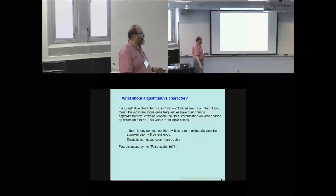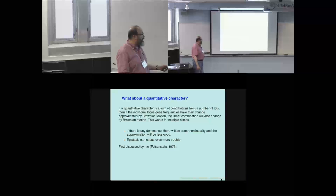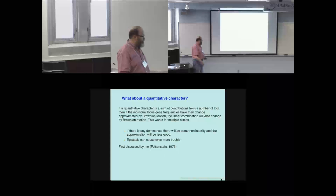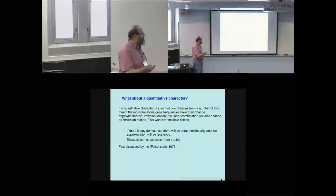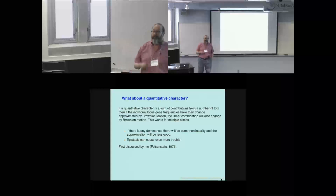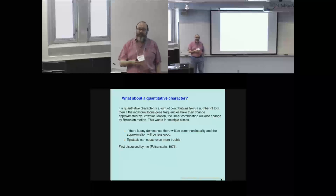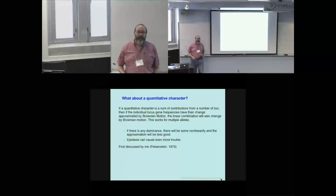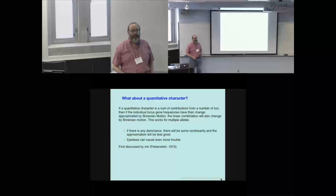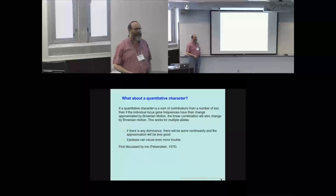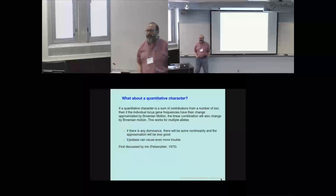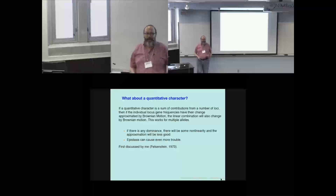Epistasis can cause even more trouble. It's a model with limitations. I think I was the first person to suggest that you use Brownian motion for quantitative characters — it's just a direct extension of what Edwards and Cavalli-Sforza were doing. And Anthony Edwards is very clear: he said, 'We would have said that very soon, but you got there first.'